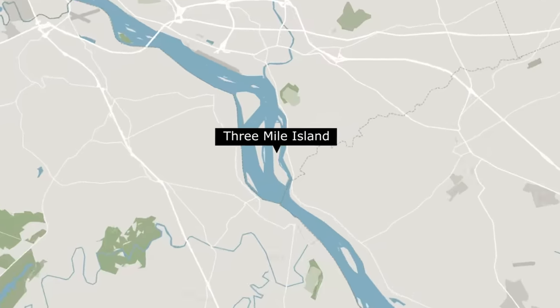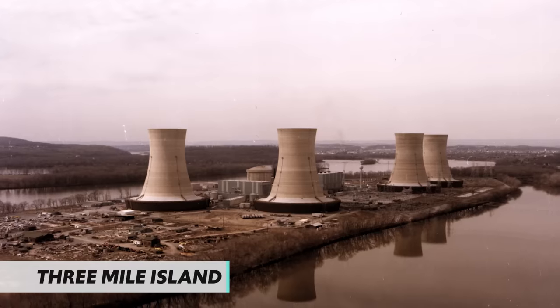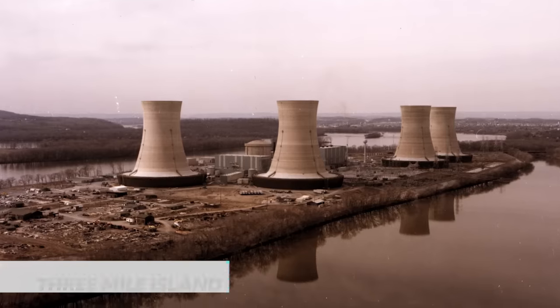Nuclear energy actually had a lot going for it. The nuclear reaction required uranium, which was plentiful and cheap, and it doesn't produce any greenhouse gases like carbon dioxide as it's being processed. But there is a downside — here's where I introduce you to Three Mile Island in Pennsylvania. In 1979, one of the nuclear reactors on Three Mile Island melted down partially, and tons of radioactive waste was released into the surrounding environment. It was not in the middle of nowhere — it was in the middle of a highly populated area and lots of people were in danger.